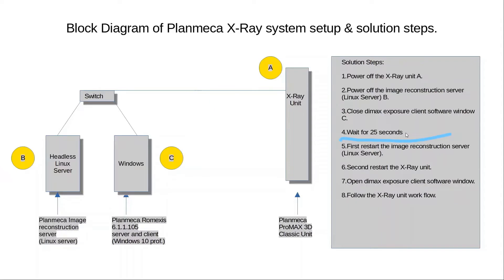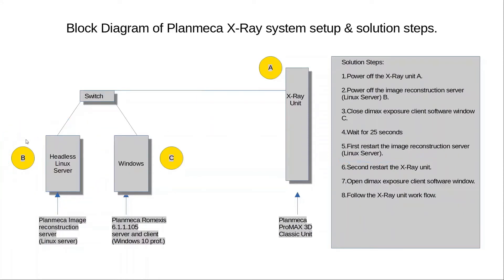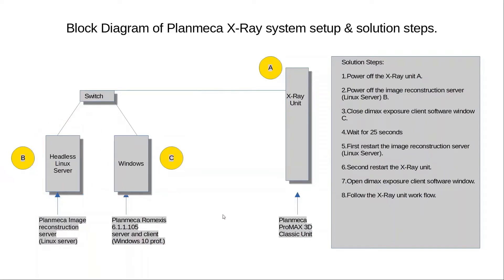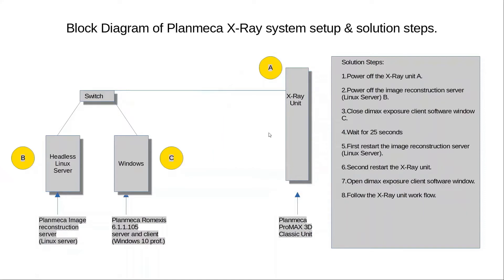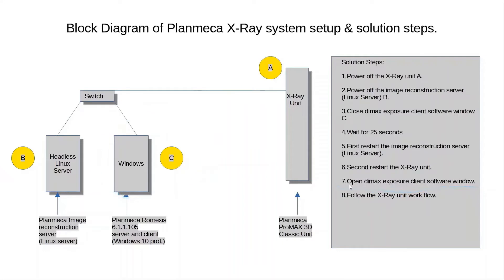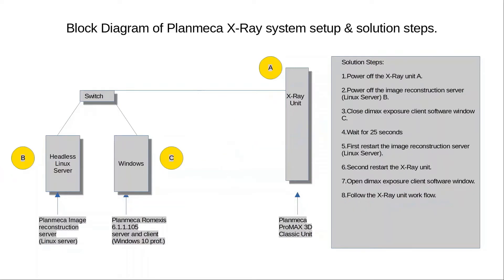Once done, move to step 5: restart the image reconstruction server. Then step 6: restart the X-ray unit. After that, come back to the Windows machine represented by C and open the DMAX Xperia client software window. Finally, go to the X-ray machine, follow your X-ray unit workflow, and that should resolve your issue.